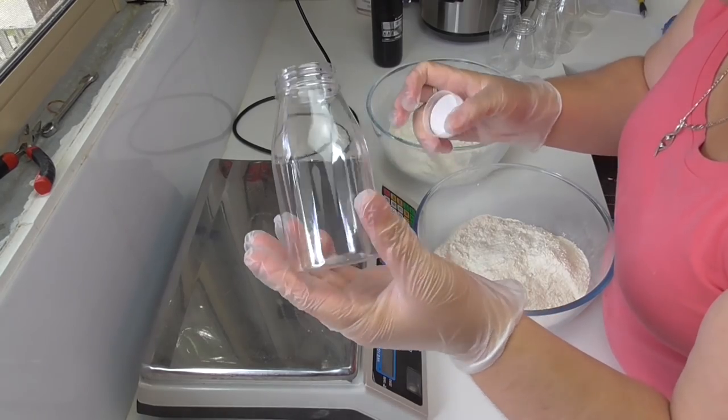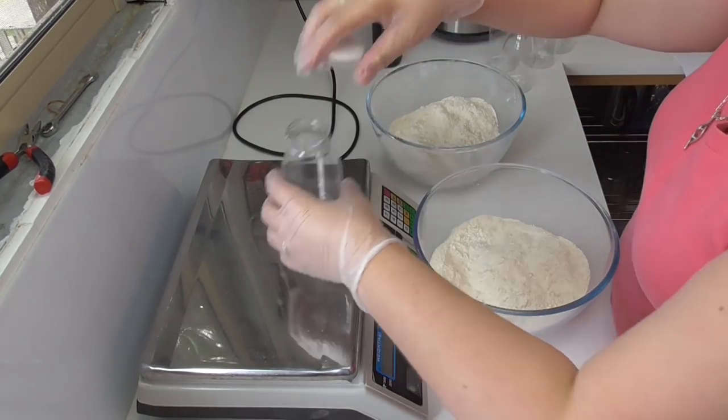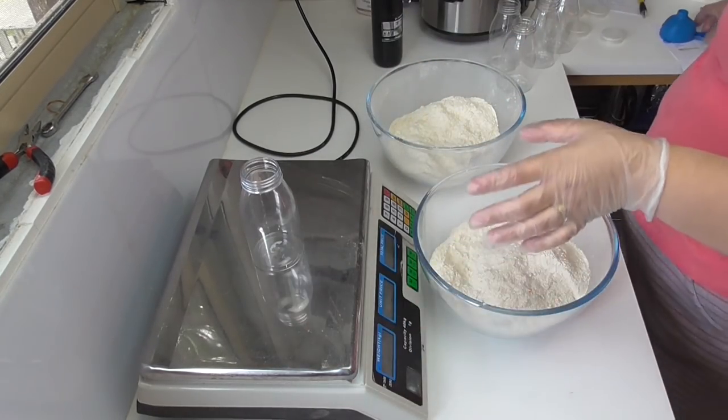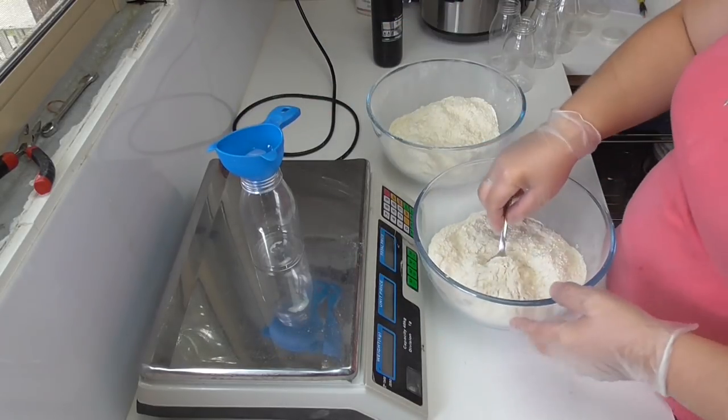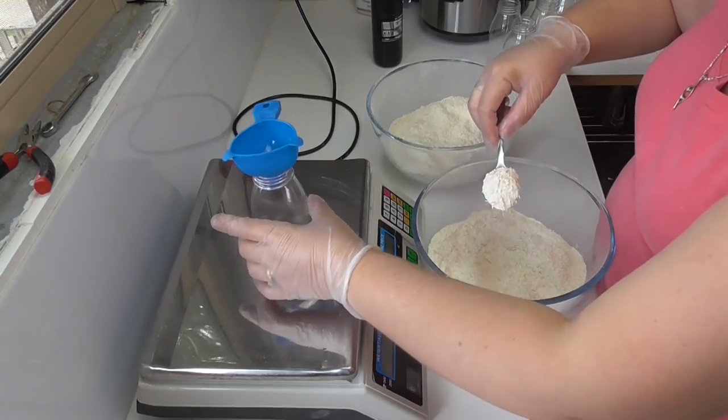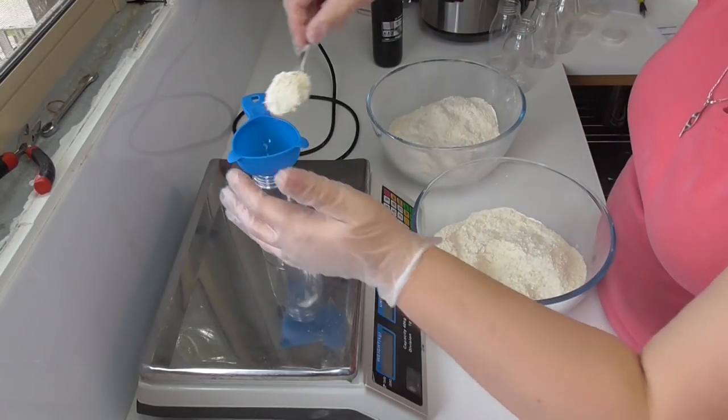Okay, so I have got some little milk bottles here which I picked up off of eBay. I'm just going to pop that straight onto the scale there with a little funnel, and then I'm going to just spoon my mixture straight into the top here and hopefully not make too much mess.